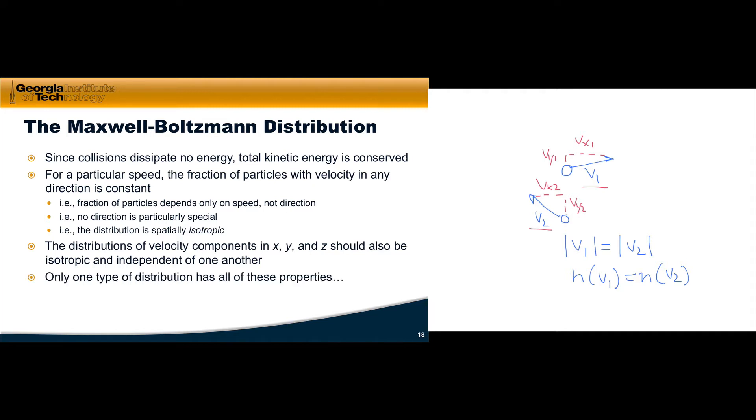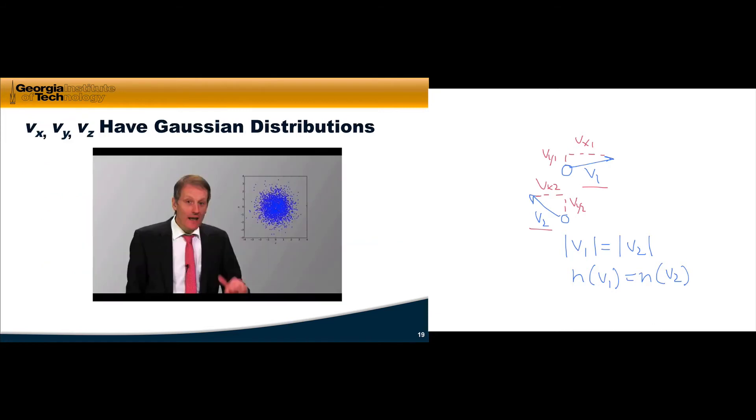There's only one type of distribution that has all of these properties. There's only one type of distribution such that we can take independent distributions in x, y, and z, combine them into a three-dimensional distribution that is also isotropic. Rather than lay it out for you myself, I'm going to turn over the reins to Werner Krauth, who's a professor of statistical mechanics. He teaches this great statistical mechanics class where this distribution is derived statistically from very fundamental, simple, and beautiful principles. So here he is describing the key distribution for the velocity components of particles within an ideal gas.